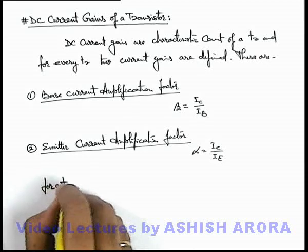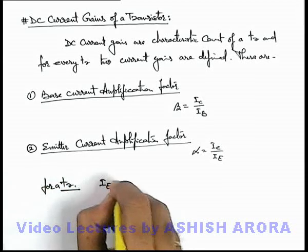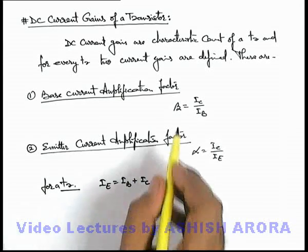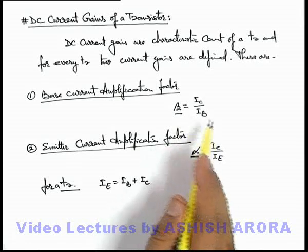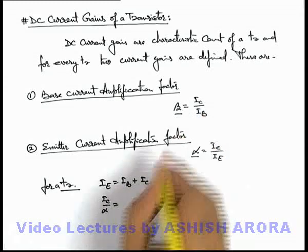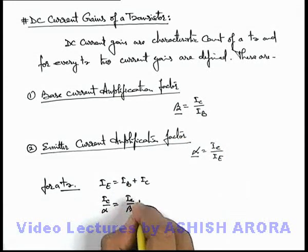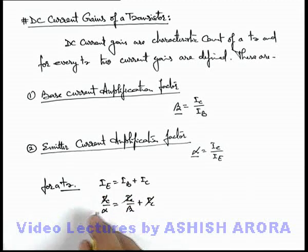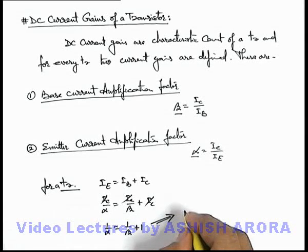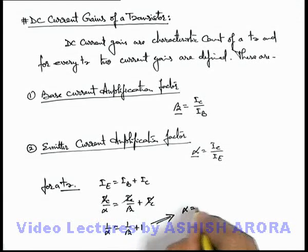For a transistor, emitter current is the sum of base current and collector current. Using these current gains we can write that I_E = I_C / alpha, and I_B = I_C / beta. This results in the relation: 1/alpha = 1/beta + 1, which implies alpha = beta / (1 + beta).